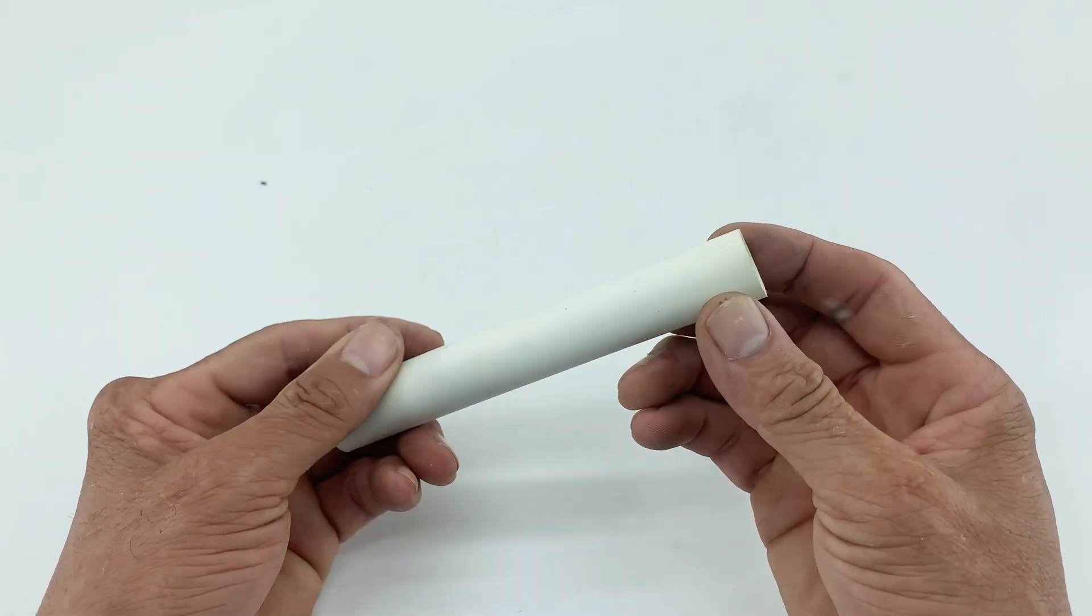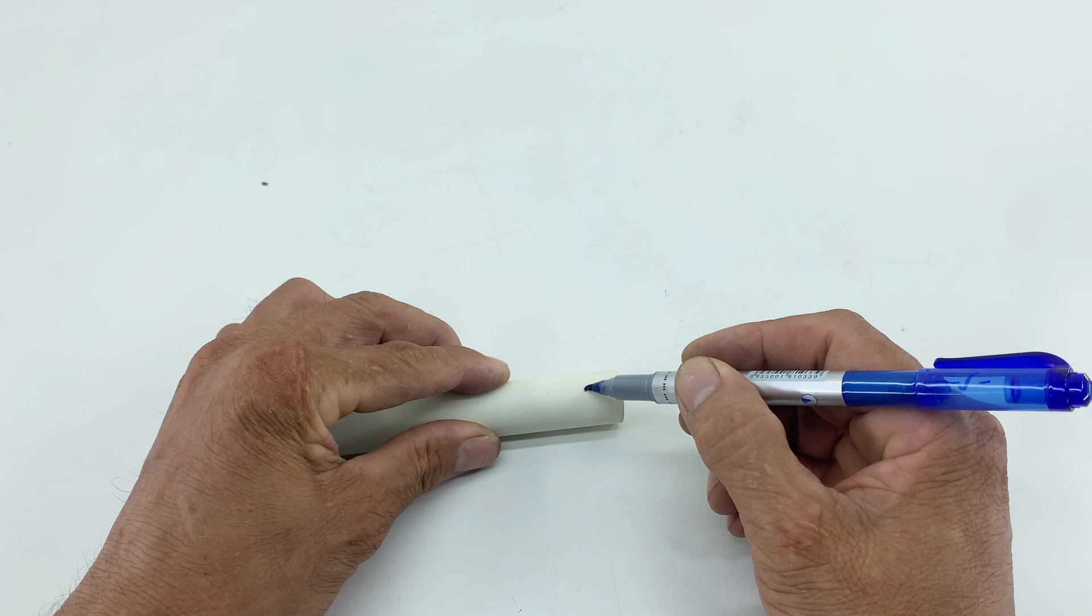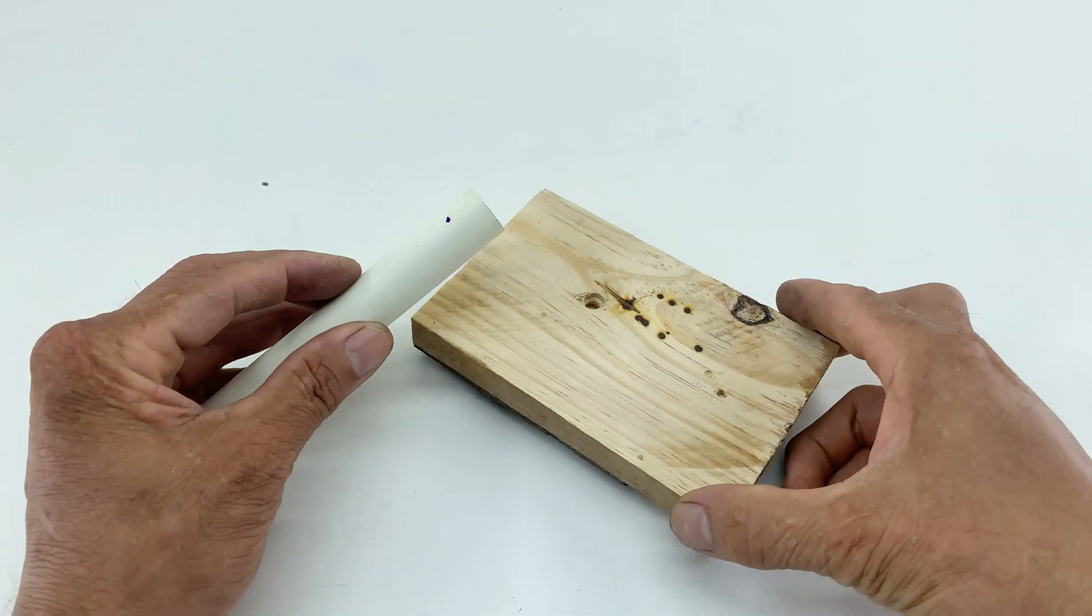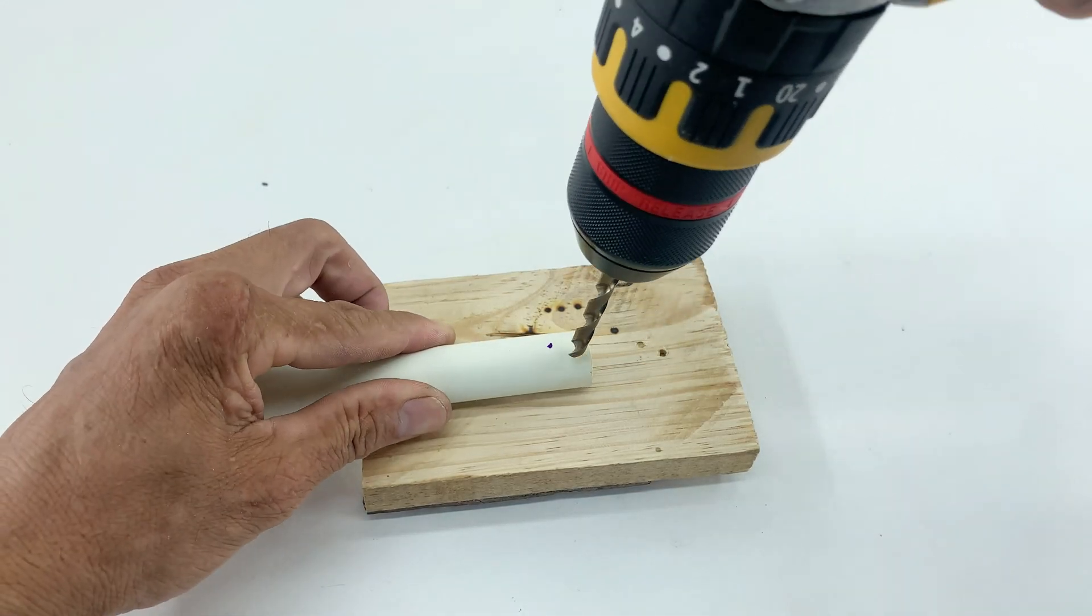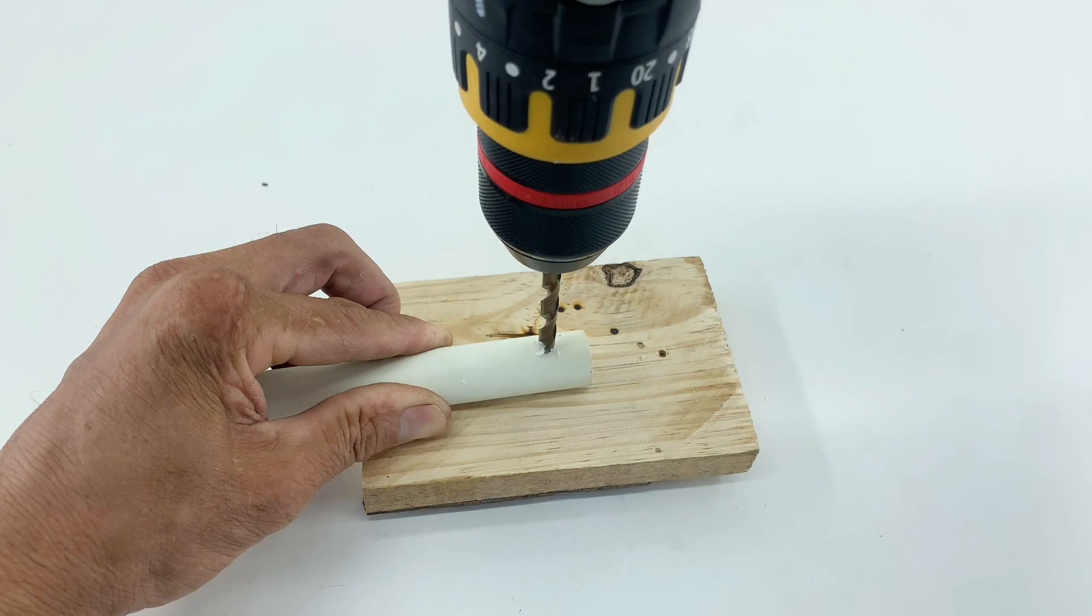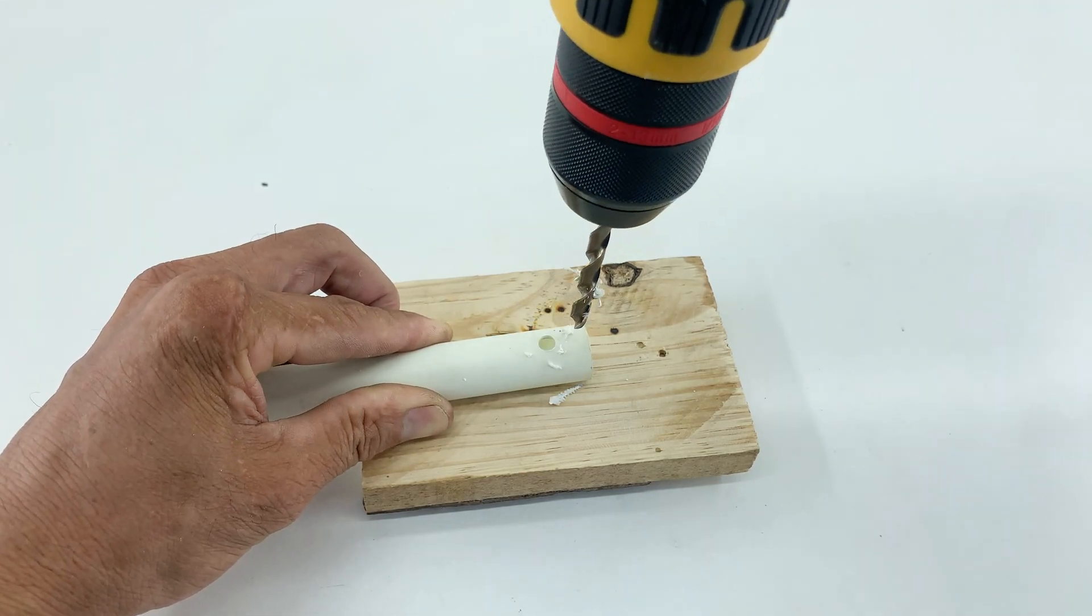With the wire securely attached, I'm now taking a length of white PVC pipe. This will serve as a handle for our tool, providing insulation and a comfortable grip. I'll be drilling a small hole about an inch from one end. This hole needs to be just wide enough for the spark plug to fit snugly, allowing it to protrude slightly.